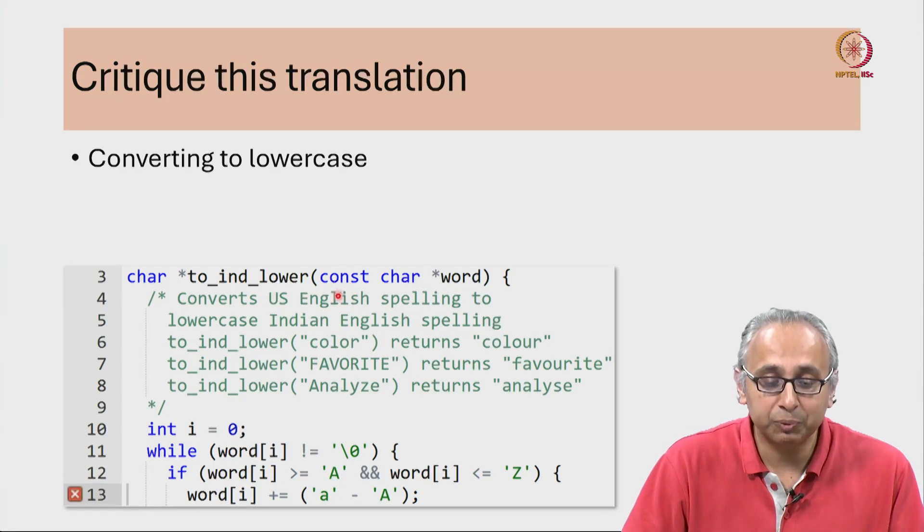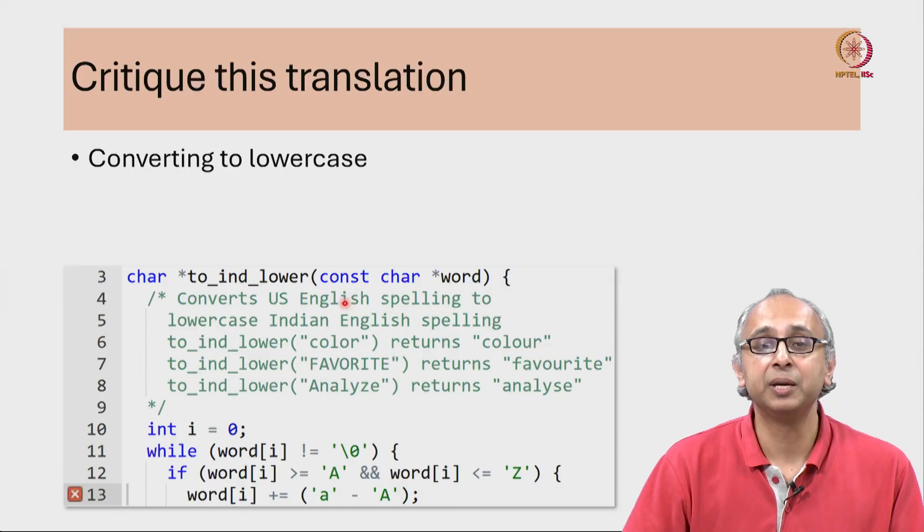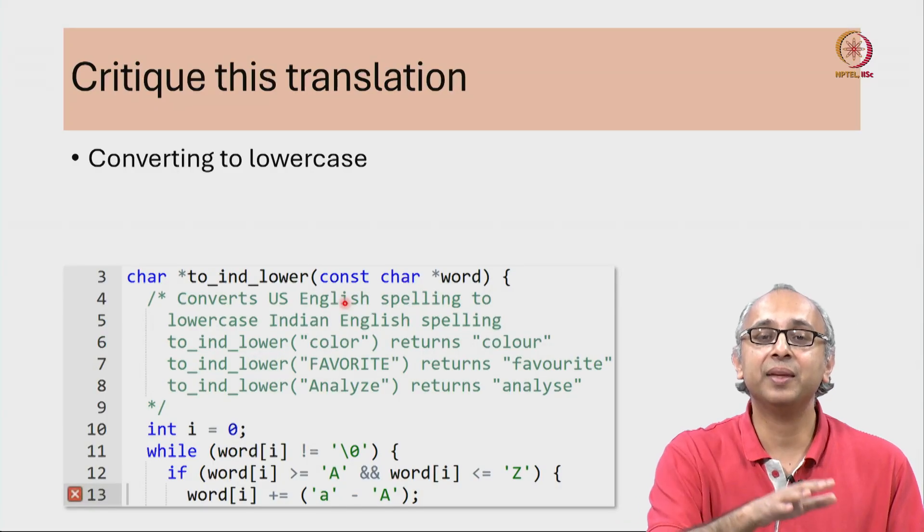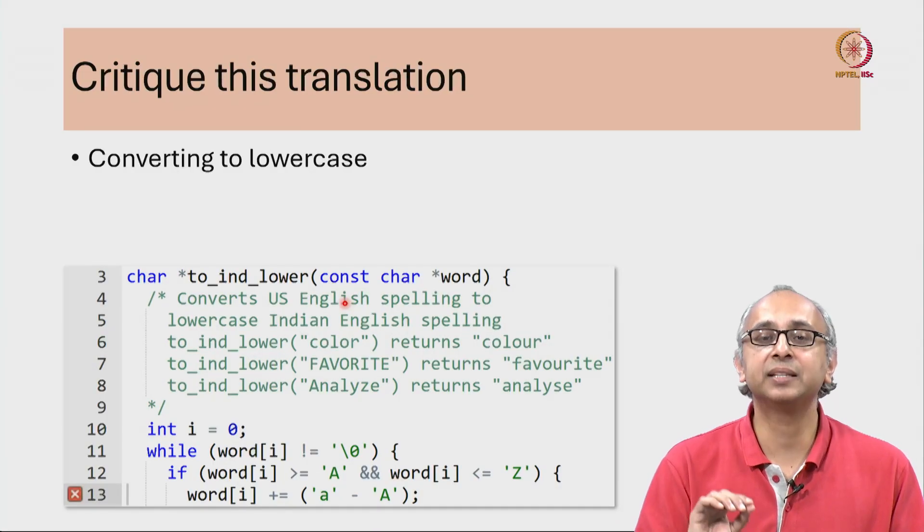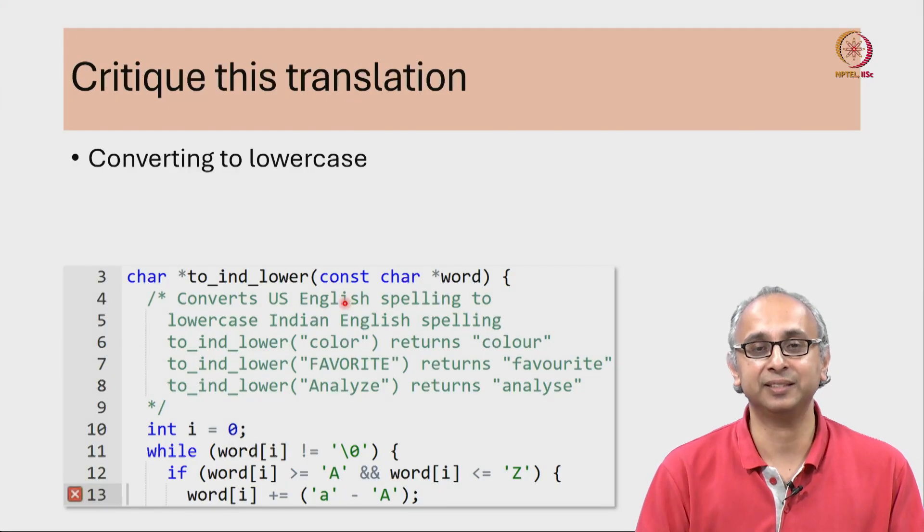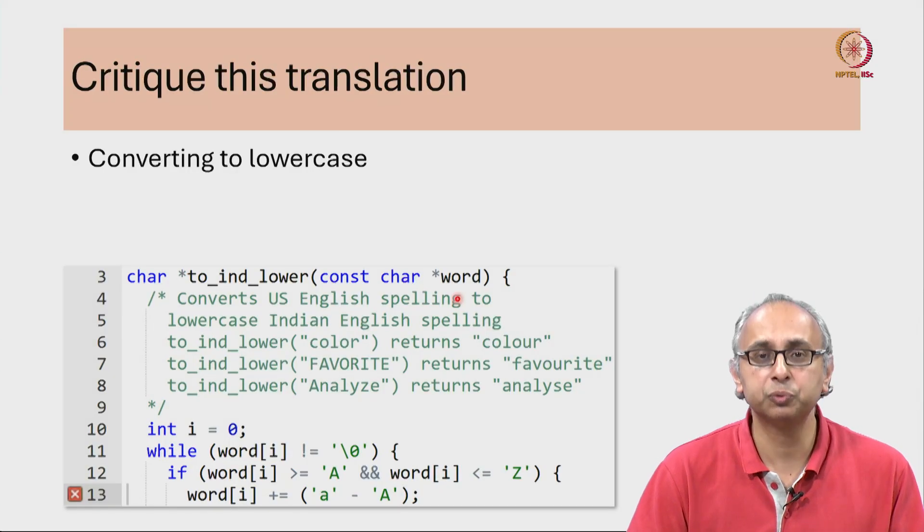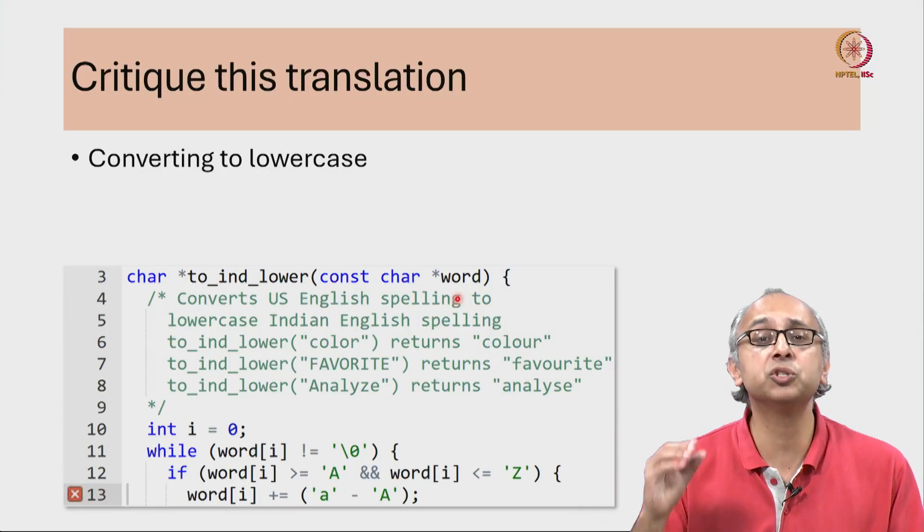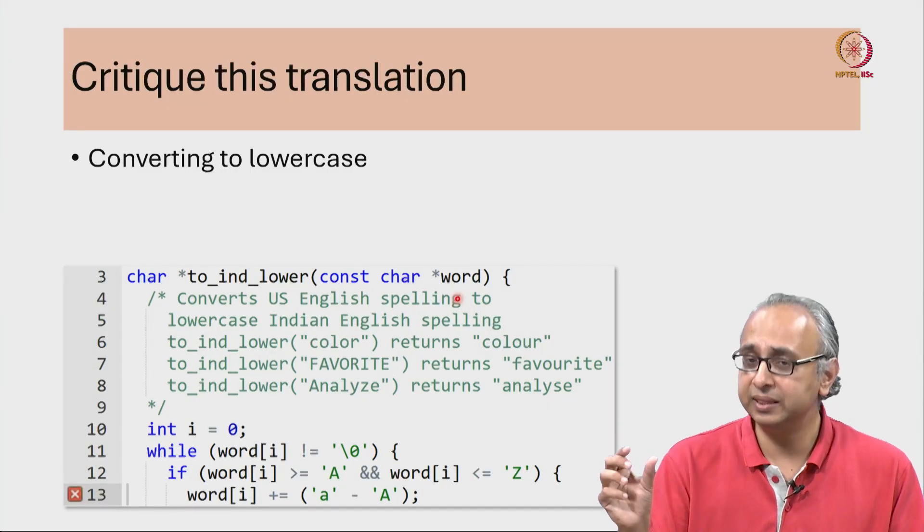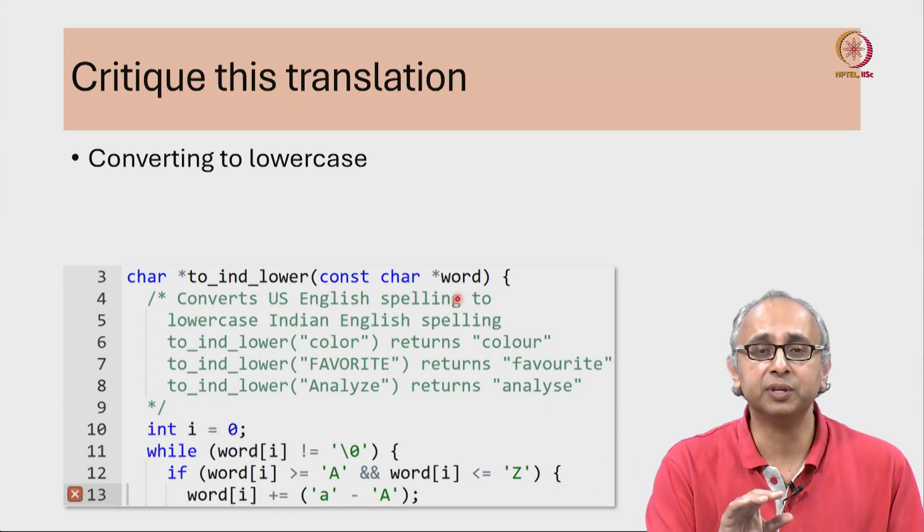You see that we can sometimes help ourselves by declaring our intention and then having the compiler detect in case we violate that intention. This is a good habit to use when our function is not supposed to modify the data in the given string or in the given array.